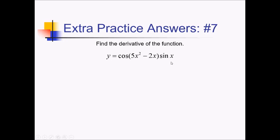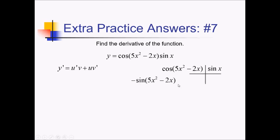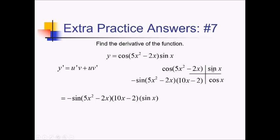To take this derivative, I'm going to use the product rule: u prime v plus uv prime. Box and ribbon here — I've got cosine of 5x squared minus 2x in one, and the other is just sine of x. Now for derivatives, I need the chain rule on the first thing: negative sine of 5x squared minus 2x, times the derivative of that inner stuff, which is 10x minus 2. Derivative of sine is cosine. Using the ribbon to put it all together, I've got all the stuff in the lower left times sine of x, plus cosine of 5x squared minus 2x times cosine of x. And we're done.